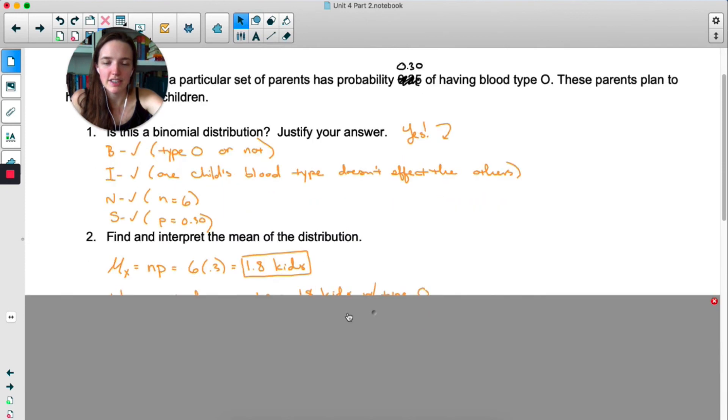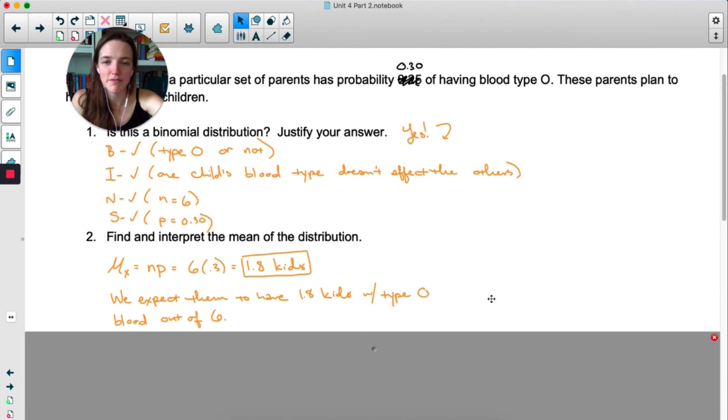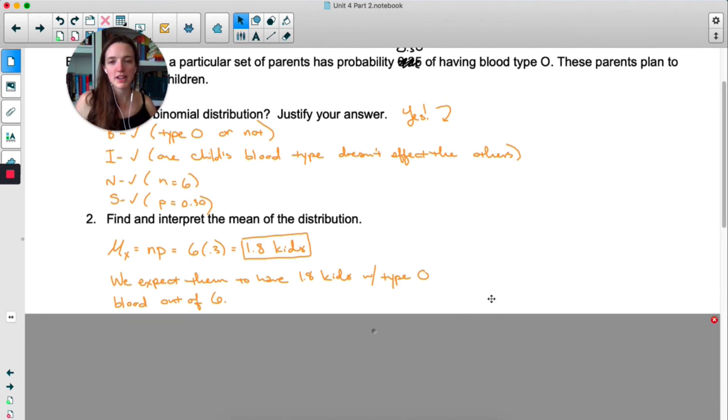To find and interpret the mean, well, we know it's binomial, so we can use our shortcut. Just n times p, 1.8 kids. We expect them to have 1.8 kids with type O blood out of six. Make sure you do mention out of six and make sure you have context. So don't just say the mean is 1.8. You need to say 1.8 kids out of six have type O blood, like include as much context as possible.